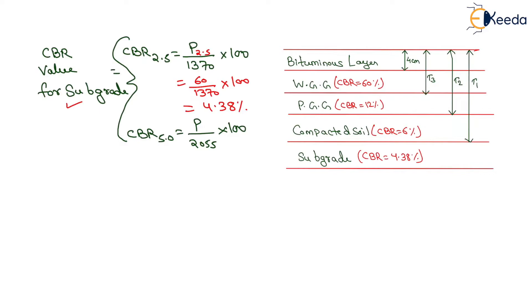Similarly, we can determine the CBR value for 5 mm penetration, which equals load at 5 mm penetration divided by 2055, multiplied by 100. Putting in the value: 82 divided by 2055 multiplied by 100, the CBR value equals 3.99%.